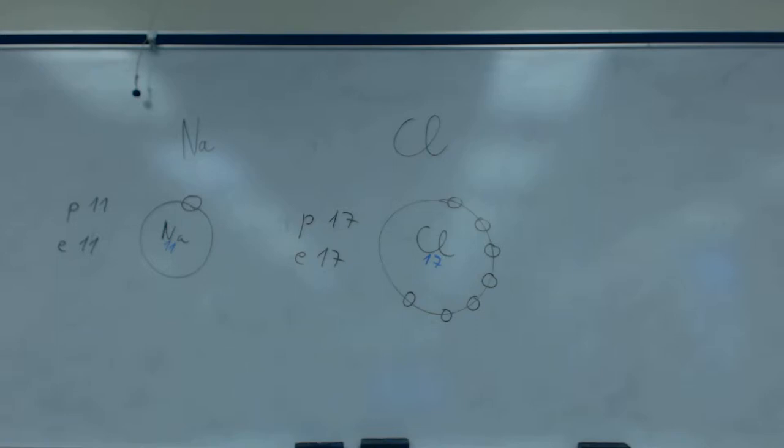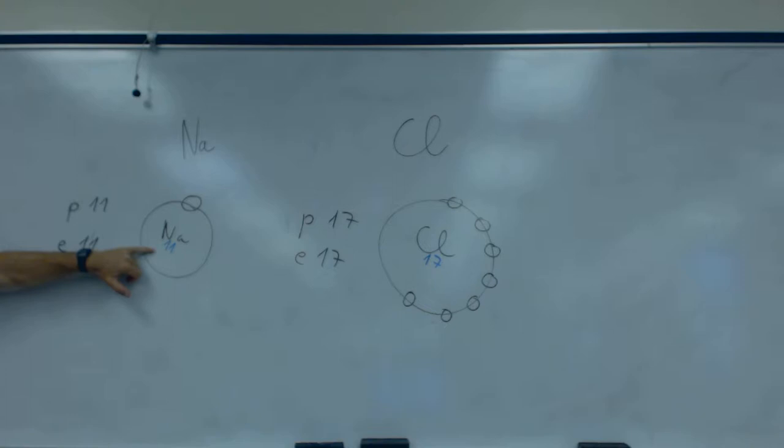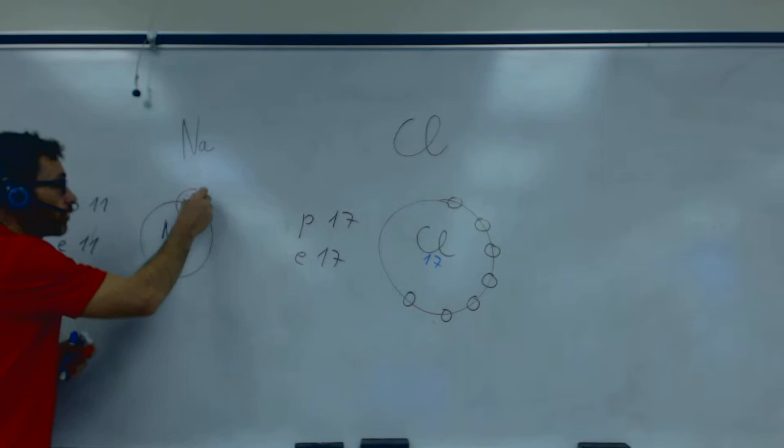So for them to be happy they need to have the last level full, okay? This could take seven electrons but for that you need a lot of energy, so it's easier for sodium to lose this electron. This electron goes to the chlorine, okay?